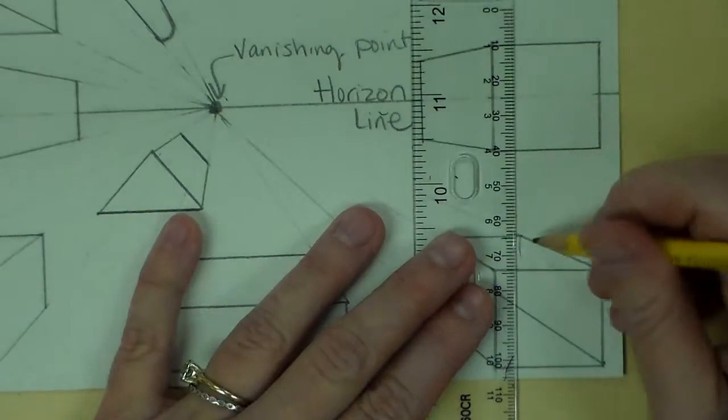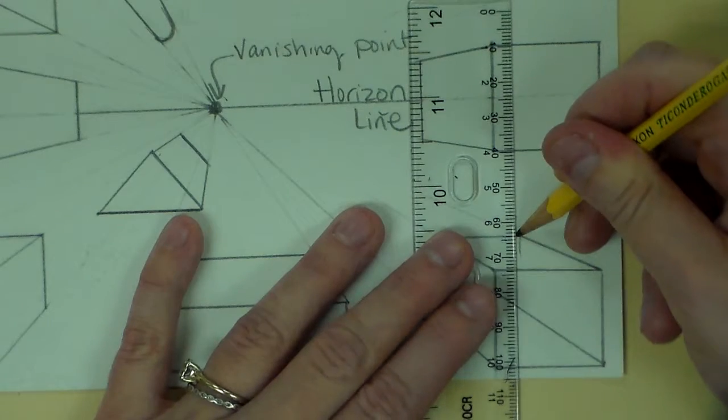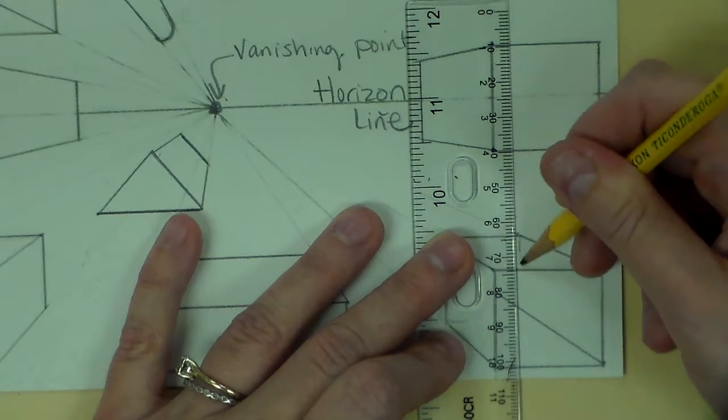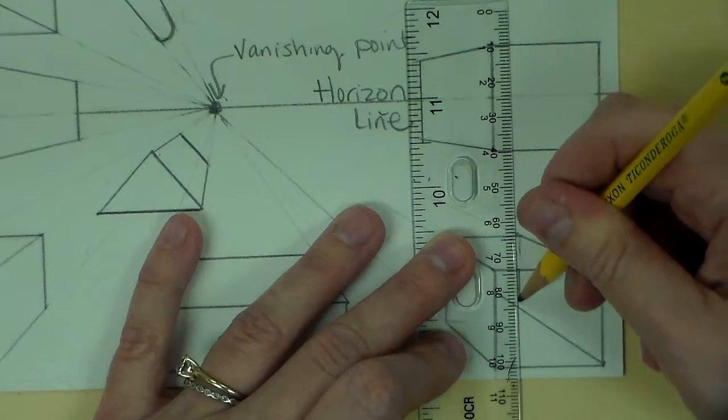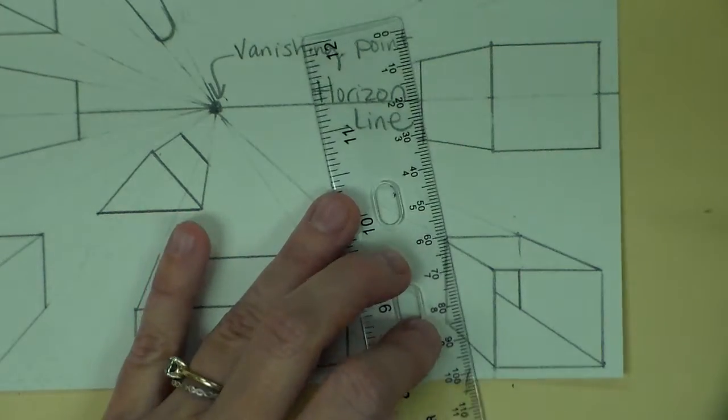So to do that, what I'm going to do is take this back corner. I'm going to skip the top because I'm not going to see through the top. I'm just seeing into the box. And I'm going to draw a line down here.